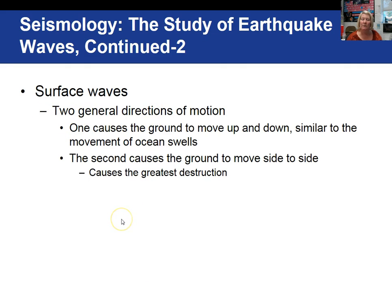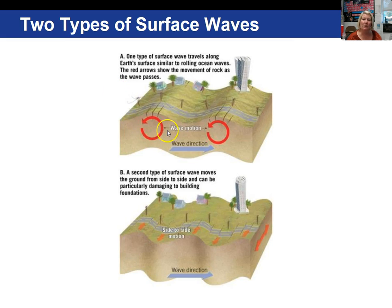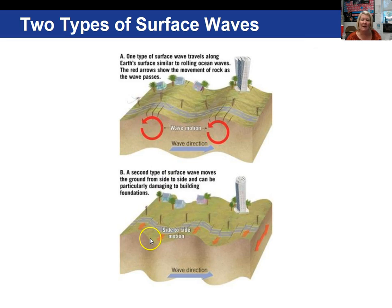Surface waves generally have two directions of motion: up and down, and side to side. It's the side-to-side motion of surface waves that causes the greatest destruction. One particular type of surface wave moves like a rolling ocean wave in an orbital motion. In the second type of surface wave, the ground moves side to side, which can be quite damaging to building foundations. Both are surface waves traveling around the outside of the Earth.